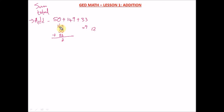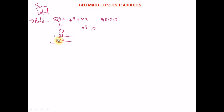Carry that 1 to the next digit. One plus four is five, and five plus five is 10, then plus three gives us 13. Since 13 is greater than nine, drop the 3 and carry the 1. One plus one is two, and there are zeros in the remaining columns, so we drop down a 2. Our answer is 232. You can confirm that with your GED calculator.